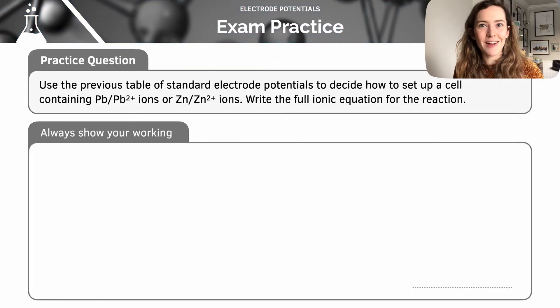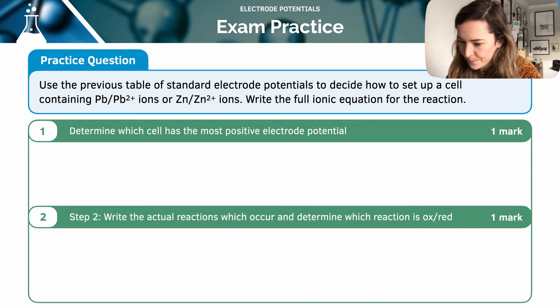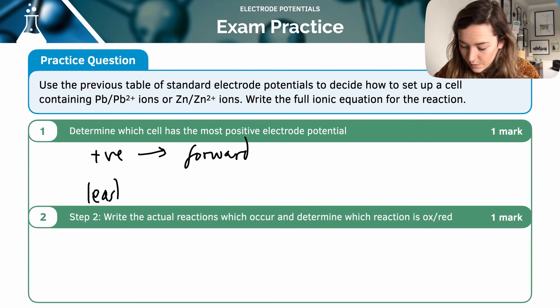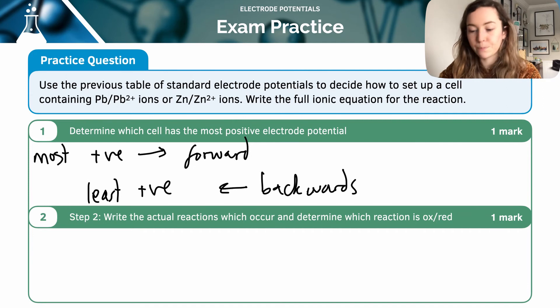Here's a question to have a practice at, but I'm going to work through the answer shortly. Of course, I'm using the table that I gave earlier on in the lesson. Here we're going to look at which cell has the most positive electrode potential. So the reaction with the most positive potential will proceed in the forward direction, and the reaction with the least positive—most negative—will proceed in the reverse or the backwards direction.